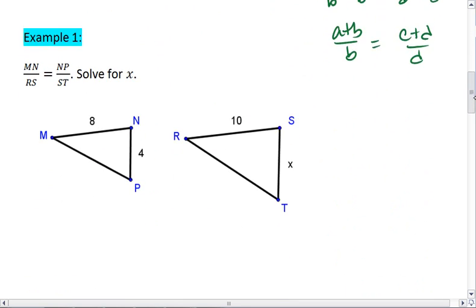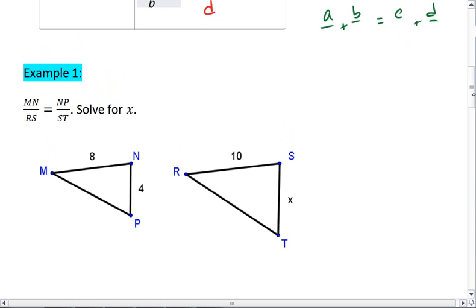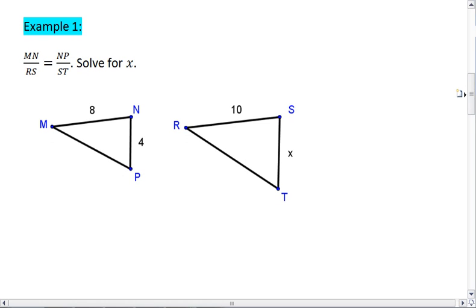Let's look at some examples. Try this first example on your own. In this example, you're told that the ratio of MN to RS, so MN to RS is equal to NP to ST. Go ahead and solve for x. Resume the video when you're ready to see the solution.